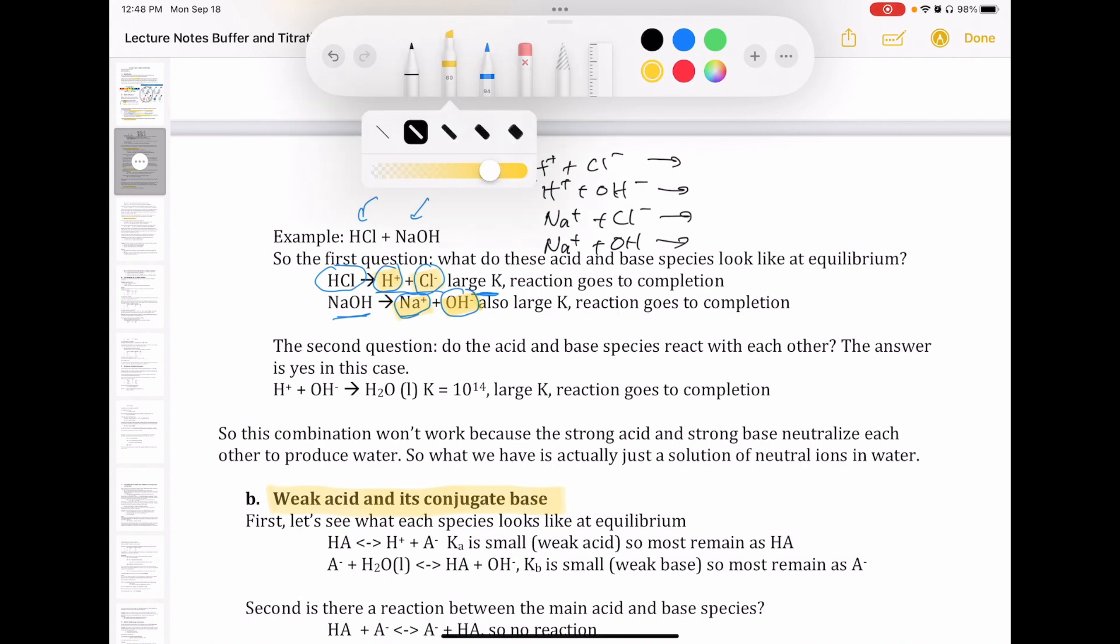The first reaction right here has a small K. How do I know? Because that's having those ions combining to form HCl. We already said that HCl is a large K reaction when it dissociates. So therefore, reforming of the HCl is not a favorable process, right? So this is not going to be a reaction we have to worry about.